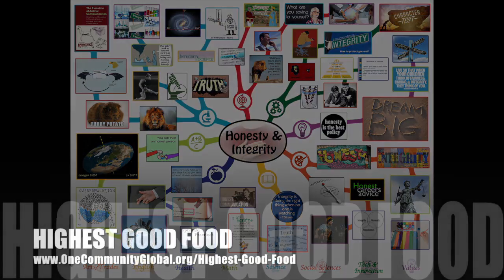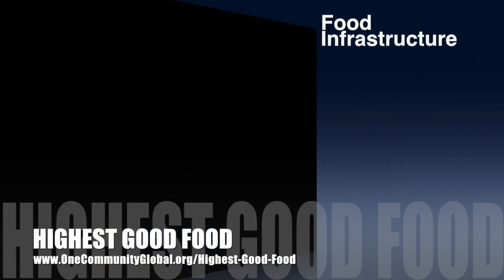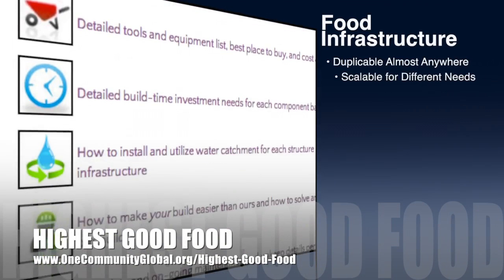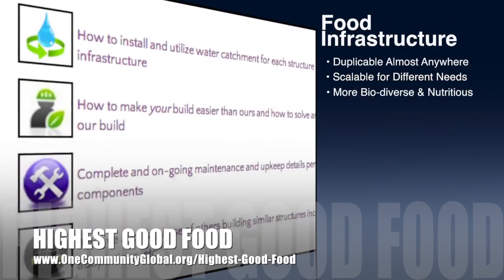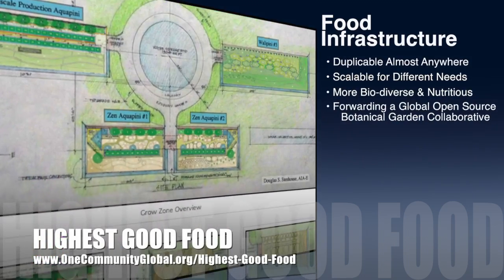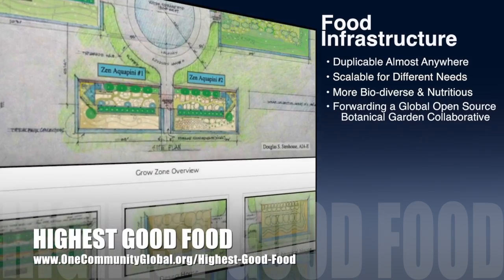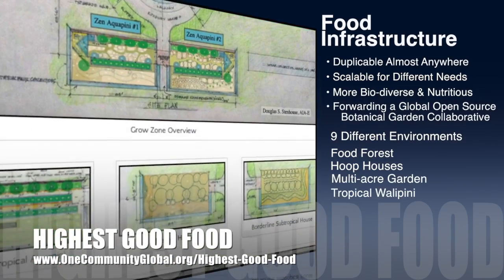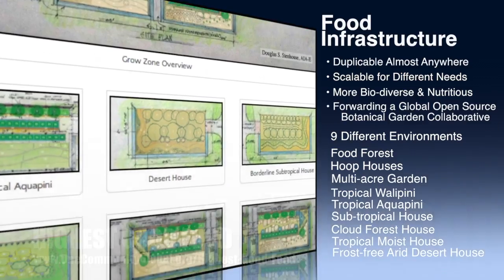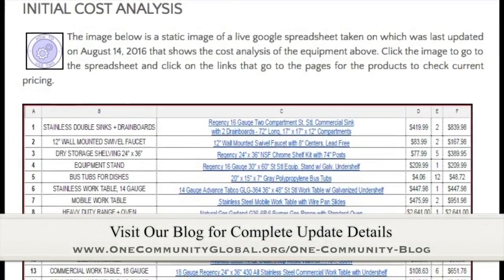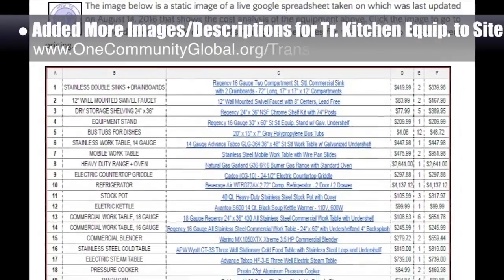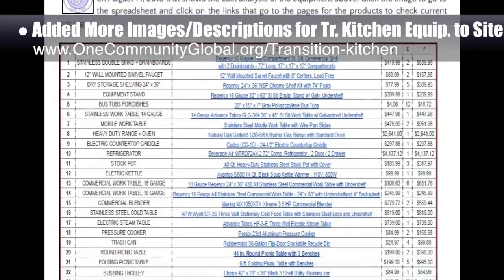We also completed the final 25% of the mind map for the honesty and integrity lesson plan, bringing that to 100% complete. One Community's approach to highest good food is duplicable almost anywhere, scalable for different needs, more biodiverse and nutritious, part of forwarding a global open source botanical garden collaborative, and includes nine different free shared and duplicable growing environments. This week the core team added additional descriptions, images, and information about hexayurts to the live version of the transition kitchen page.